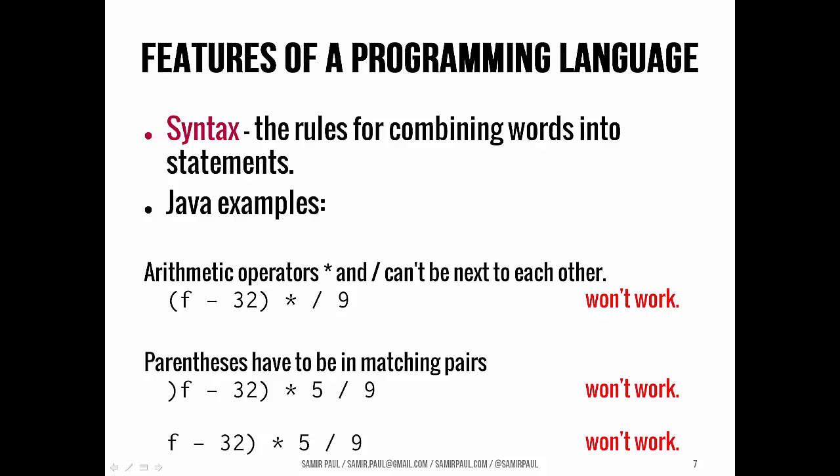Same in a programming language in Java — here are a couple of examples. The multiplication sign and the division sign can't be adjacent to each other. Parentheses have to be in matching pairs. These are syntactic rules that we have to follow in order to have actually intelligible Java code.